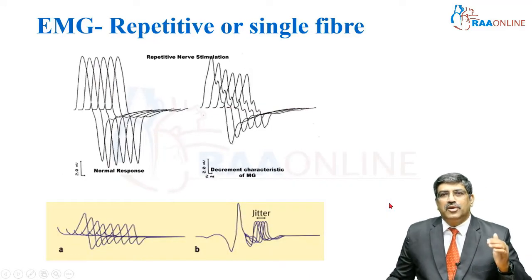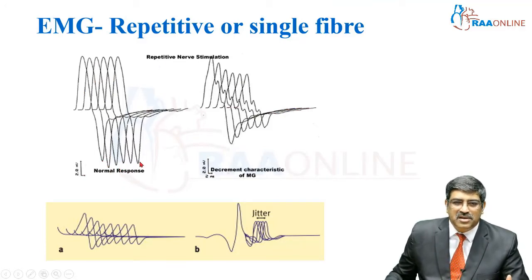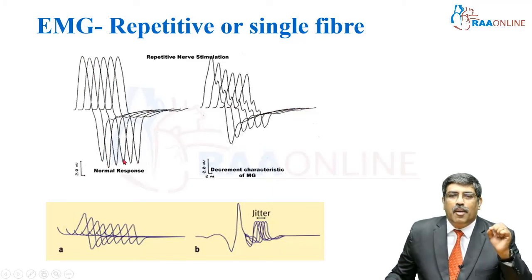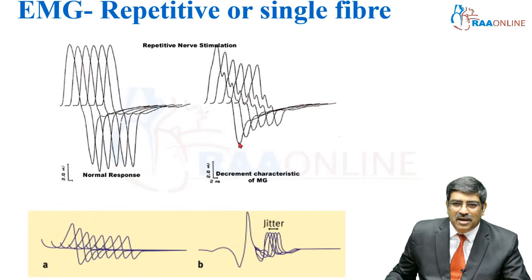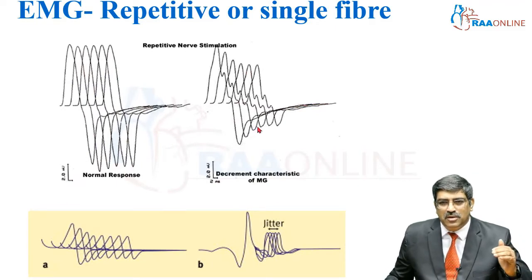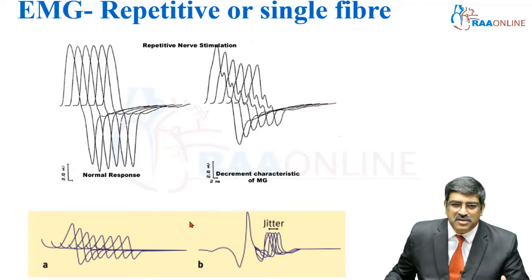Coming to electromyogram. With repetitive stimulation, the normal response is seen — there is no decremental response. But with myasthenia gravis, you can see the response becomes decremental. As you go on, the response becomes poor. This is one classical sign of myasthenia gravis.